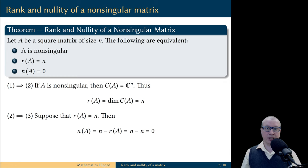This is because rank and nullity add up to N. This shows that the nullity of the matrix A must be equal to zero, and therefore statement 2 implies statement 3.